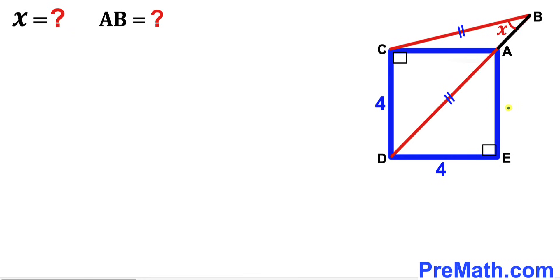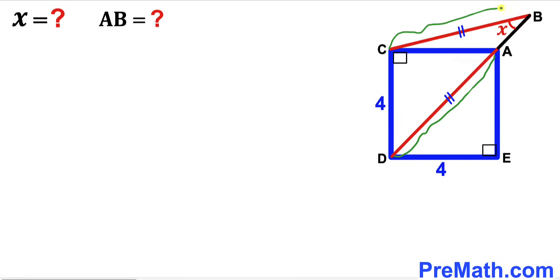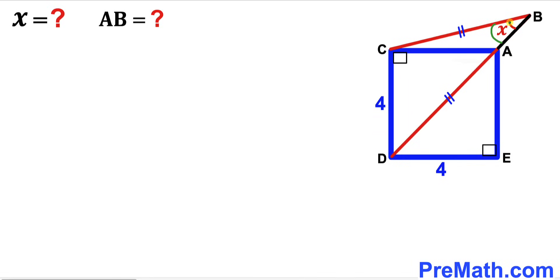Welcome to pre-math. In this video we have got a blue square CDEA along with segments BC and the whole segment BD, such that AD is the diagonal of this blue square. The diagonal DA length equals segment BC length, and points D, A, and B are collinear. The side length of the blue square is 4 units, angle ABC is represented by X degrees, and our task is to calculate angle X and segment AB.